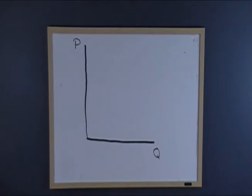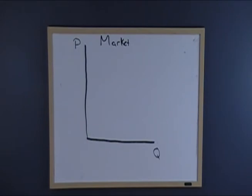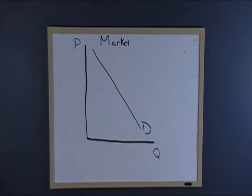We can draw a demand curve, and that's going to show all of the relationships between price and quantity demanded for the certain market we're looking at. Up top is where we would label which market we're actually looking at — we'll just label it as 'market' for now. It could be any goods and services market. Our demand curve is a downward sloping curve, meaning at a high price there is going to be a small quantity being demanded. If the price of something is really high, not very many people are going to be willing to purchase at that price. However, as the price goes down, more and more people become willing to purchase a larger quantity of that product.